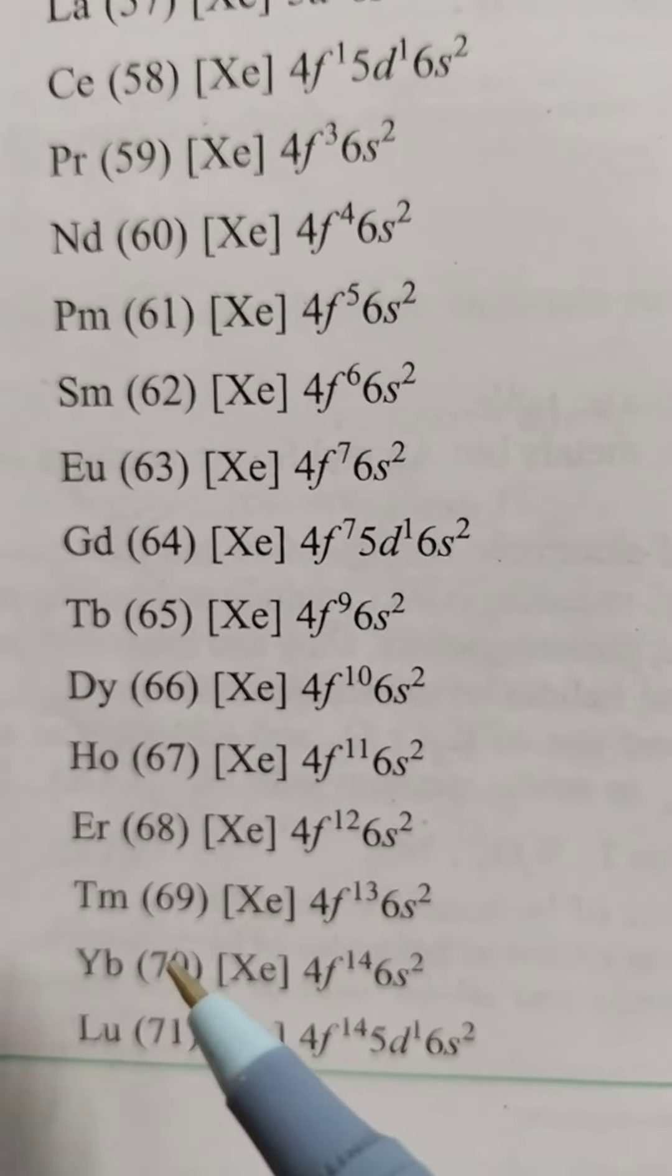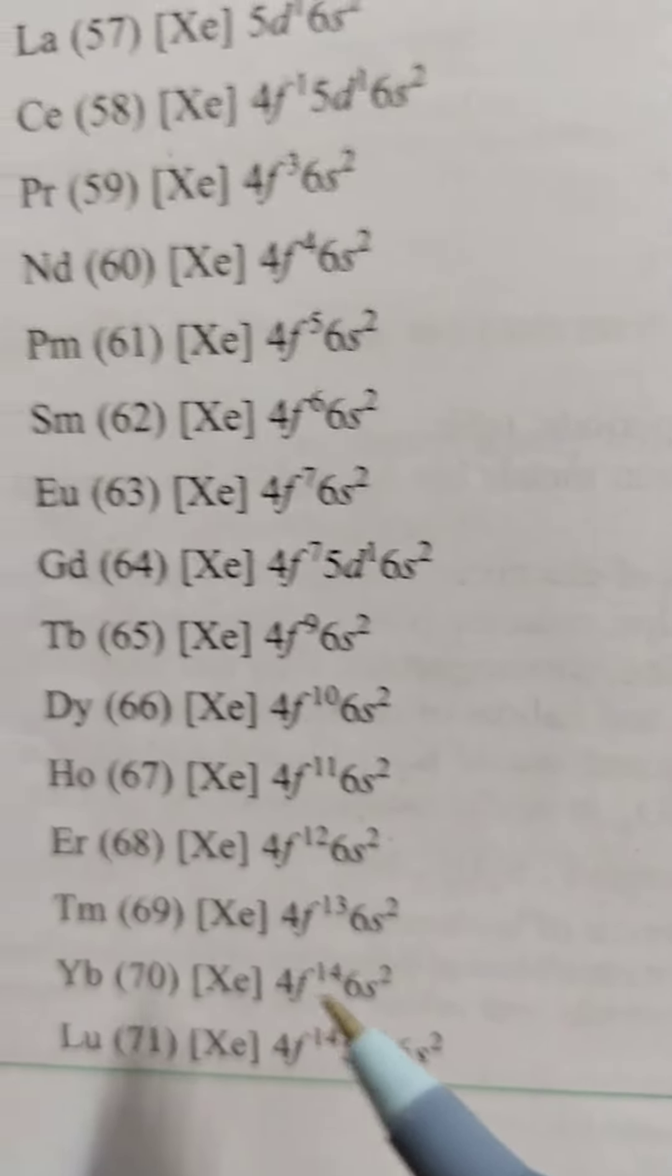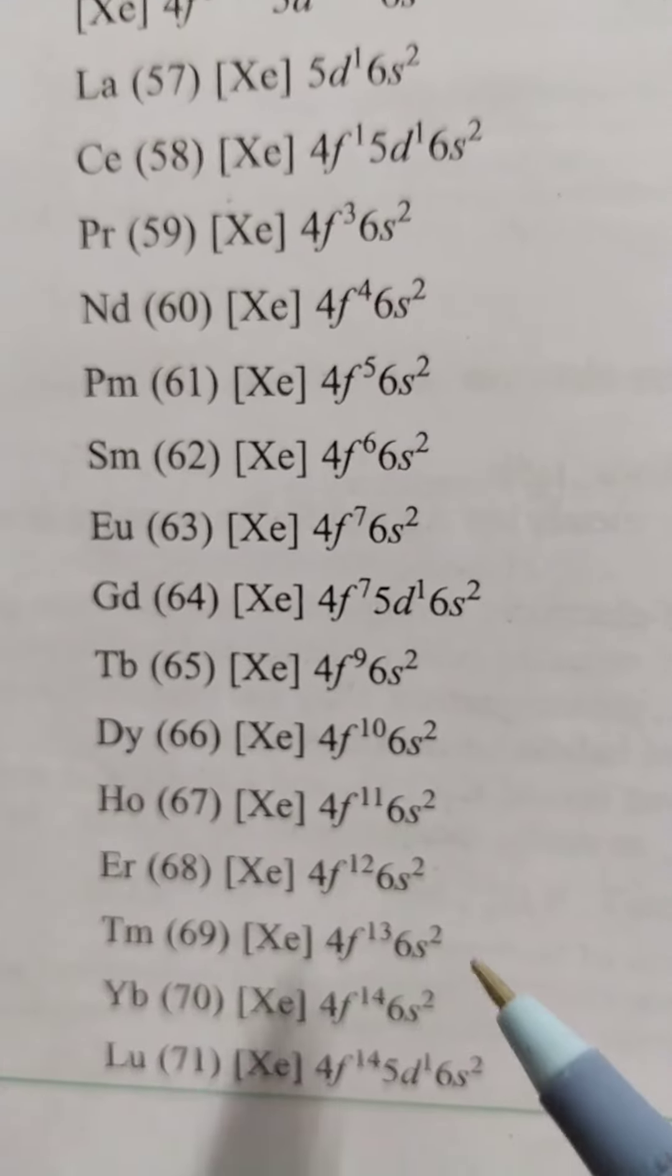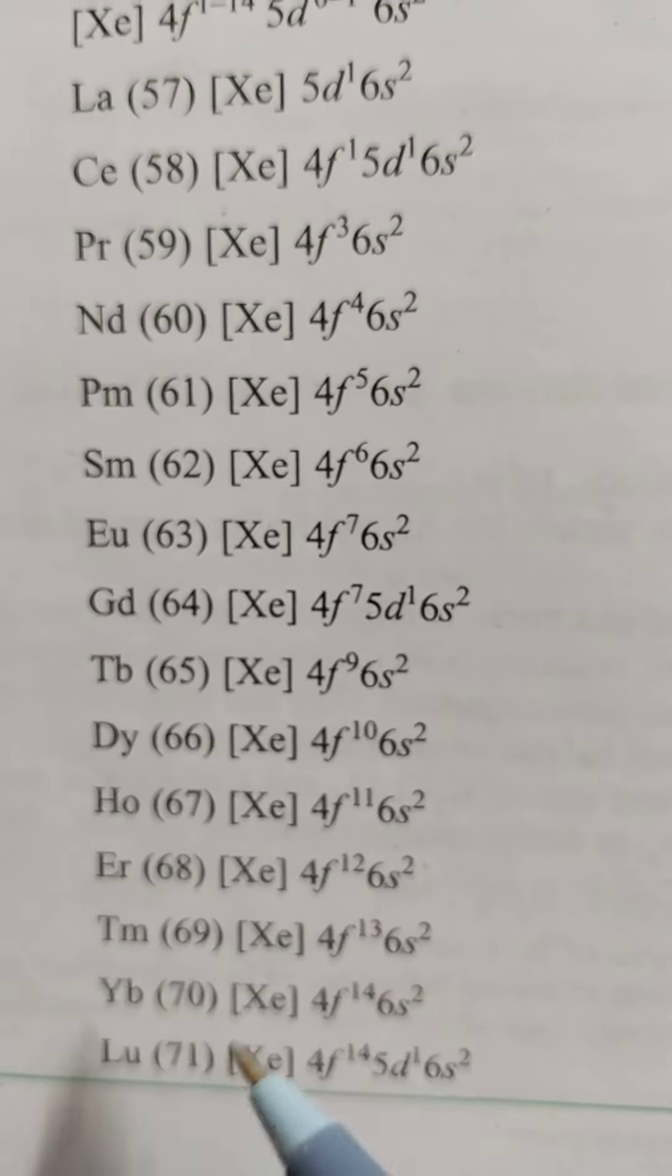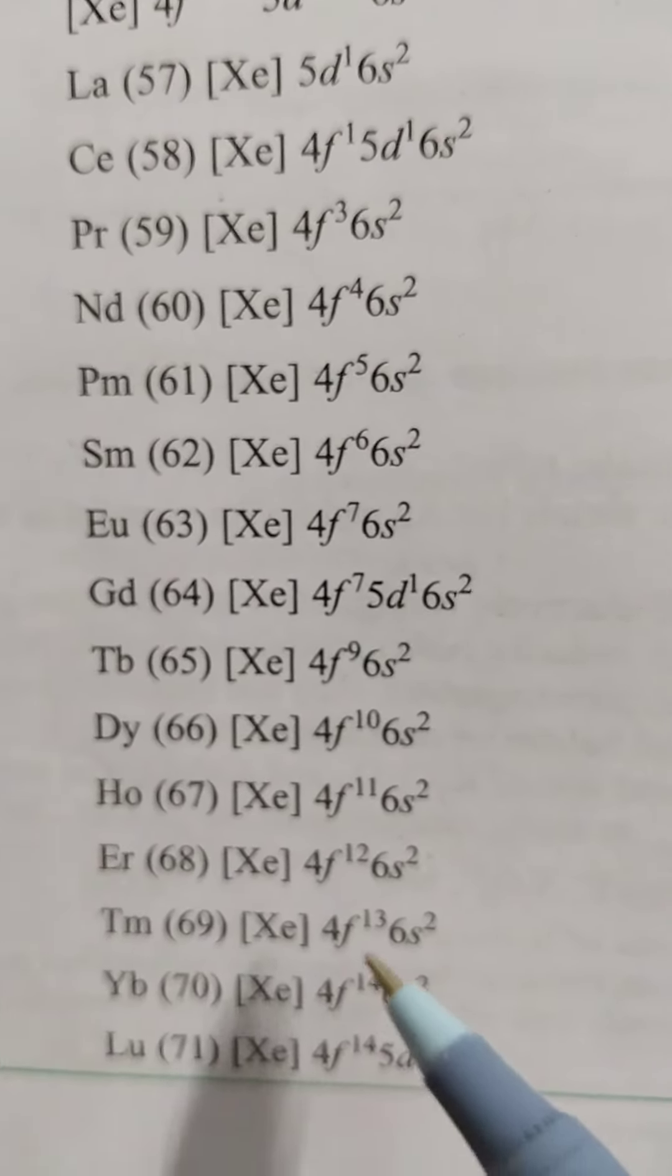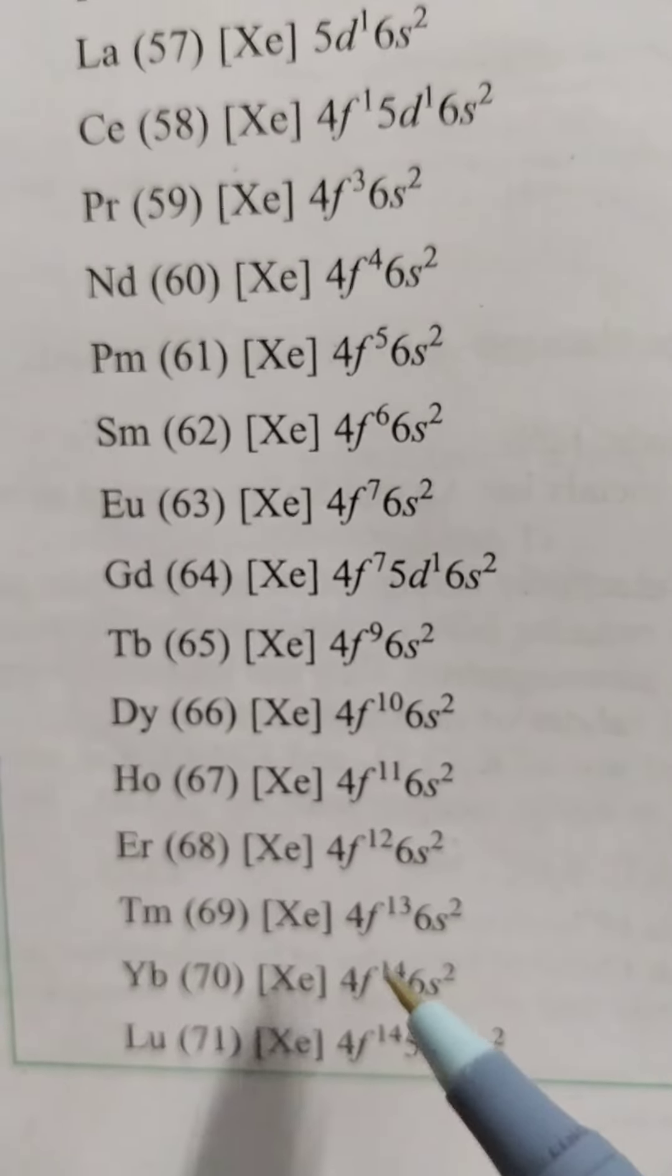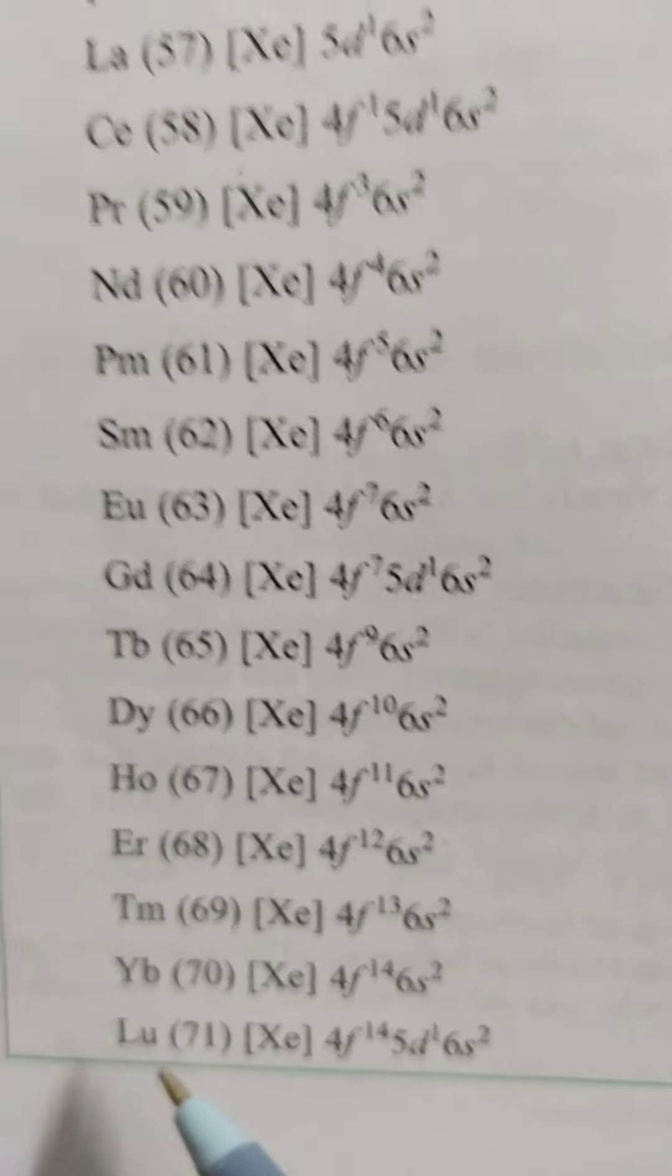if you go through Ytterbium 70, atomic number xenon 4f^14 6s^2. It loses 2 electrons converted to xenon 4f^14. Completely filled configuration, more stable. So Ytterbium+2 is more stable.